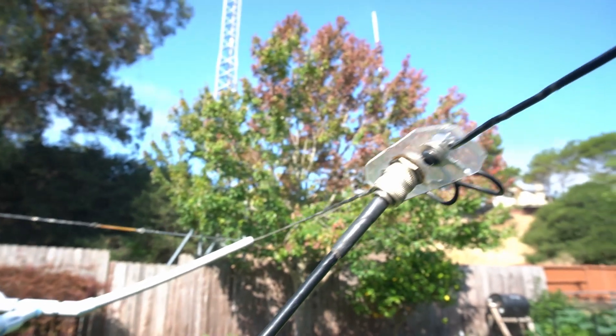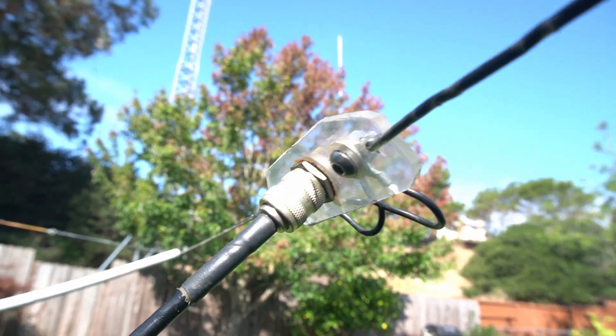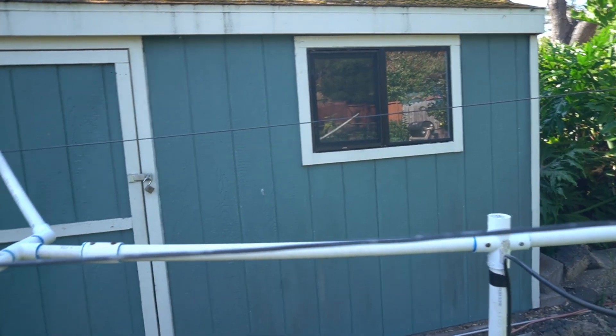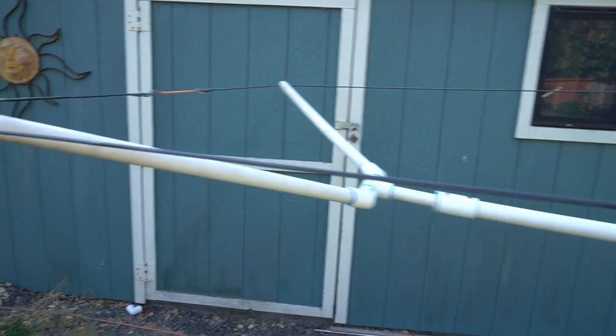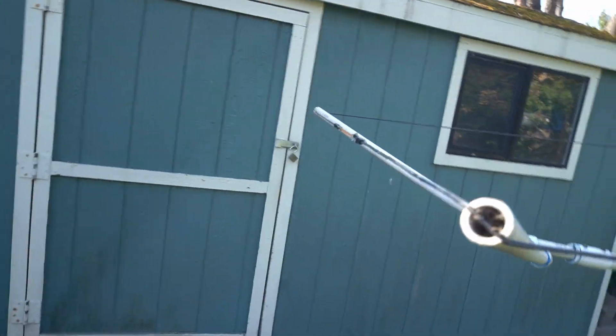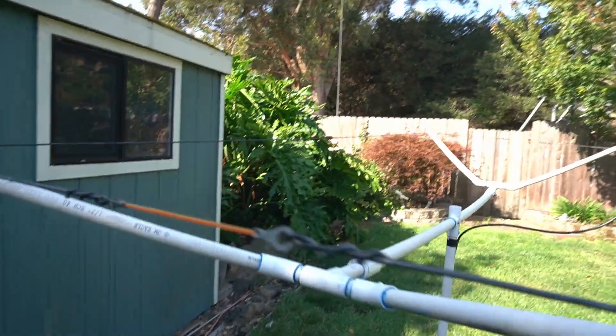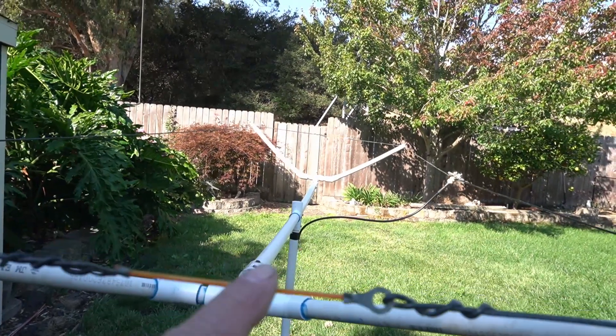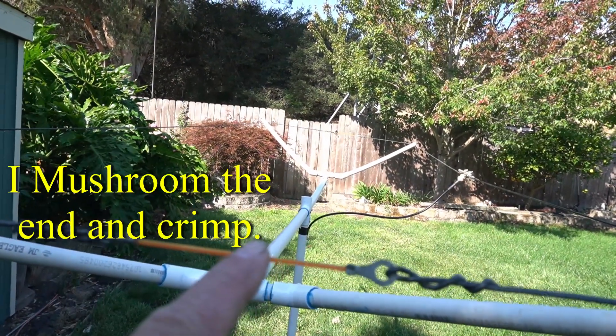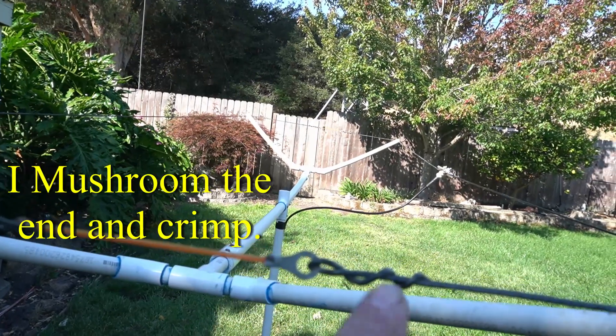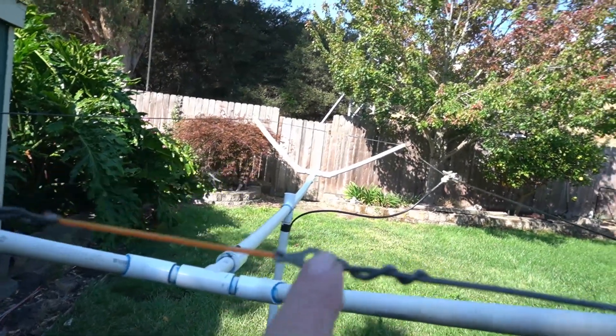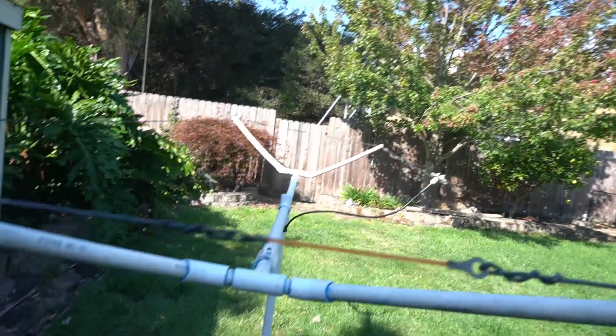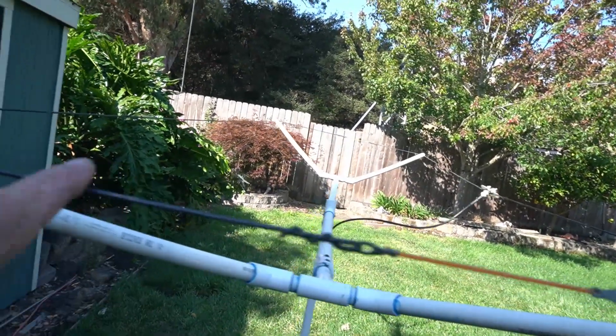Then your coax goes up in there. This is your driven element right here, comes around, hooks here. Now this little piece here is just weed whacker line, weed trimmer, and then I just got the end. So your driven unit ends here, same on both sides. And then your reflector is back here, which is a little bit longer and it just goes all the way around.